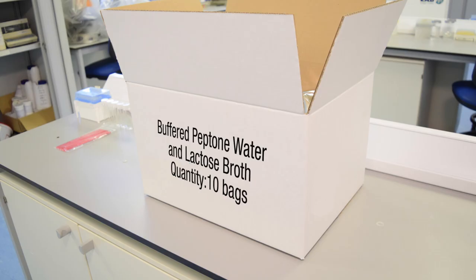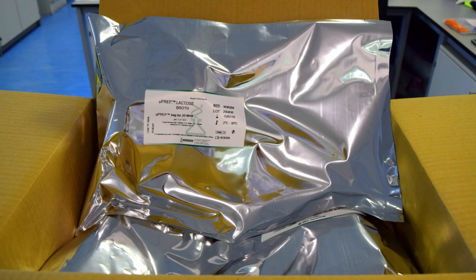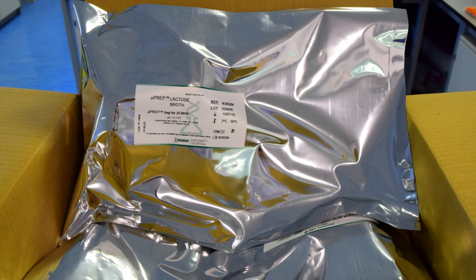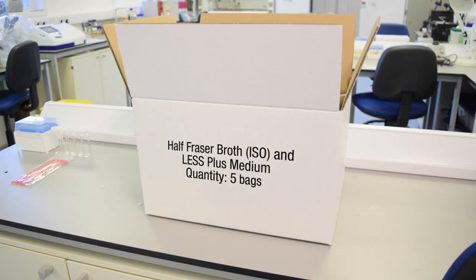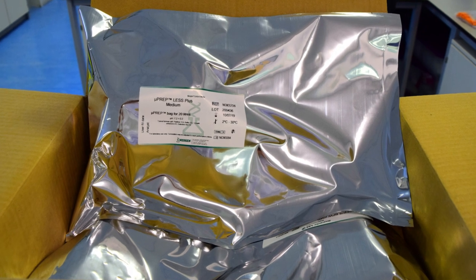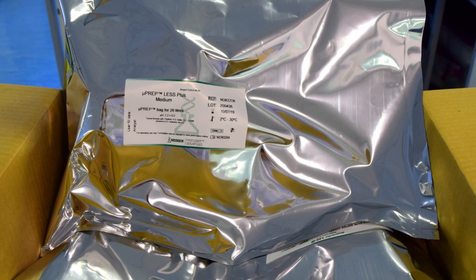BPW and lactose broth come in boxes of 10, with individual MicroPrep bags hermetically sealed in foil single-use bags. Half Fraser broth and LesS Plus have the same packaging, just 5 bags per box due to the volume of dehydrated culture media within each bag.